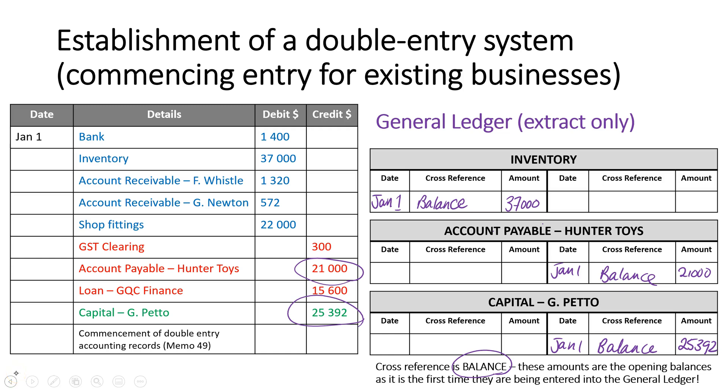So this is what you need to be able to record in the general journal and in the general ledger for commencing entries.